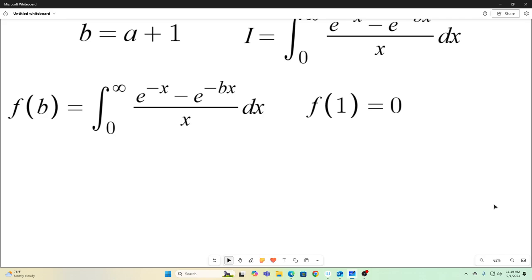Next, we use the Leibniz rule for differentiation under the integral sign to take f prime of b simply by taking the partial with respect to b of the integrand and leaving the rest alone. So this is what you get. You get f prime of b is equal to the integral from zero to infinity of e to the negative bx dx. And that easily evaluates to one over b.